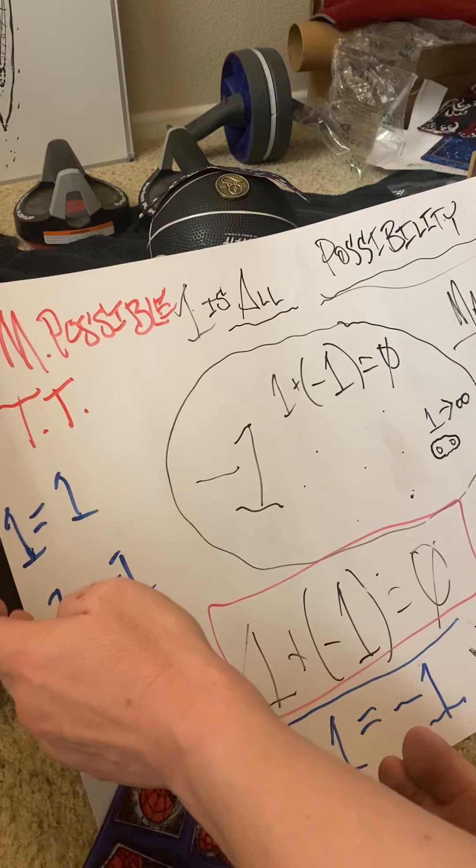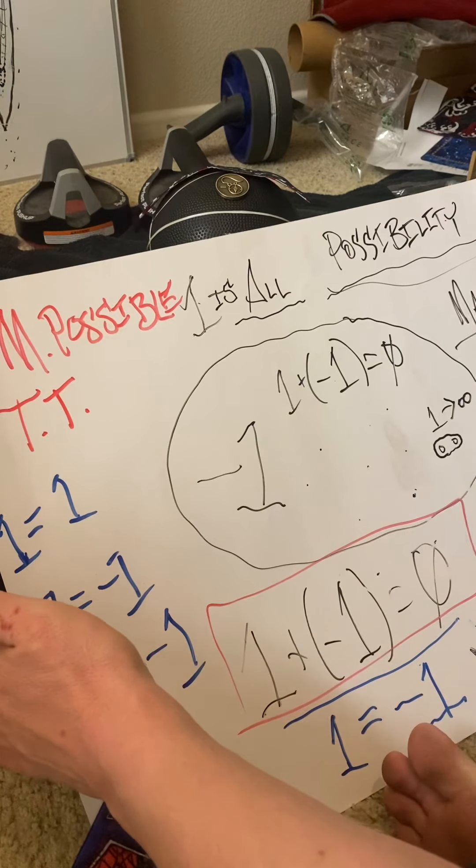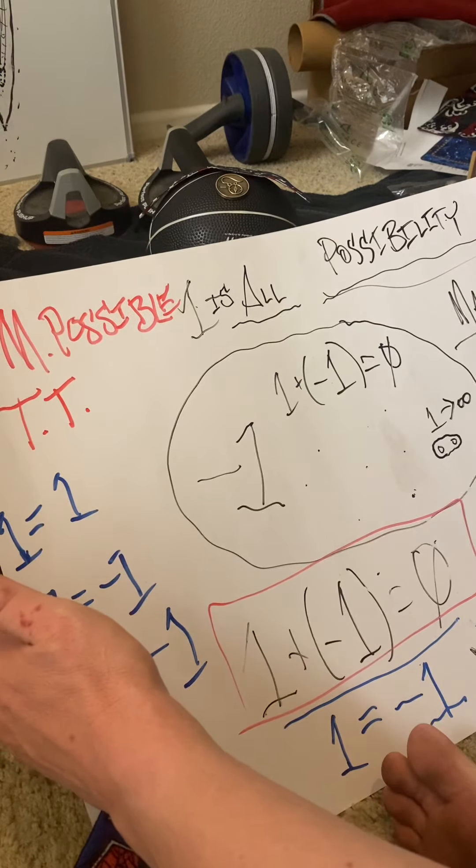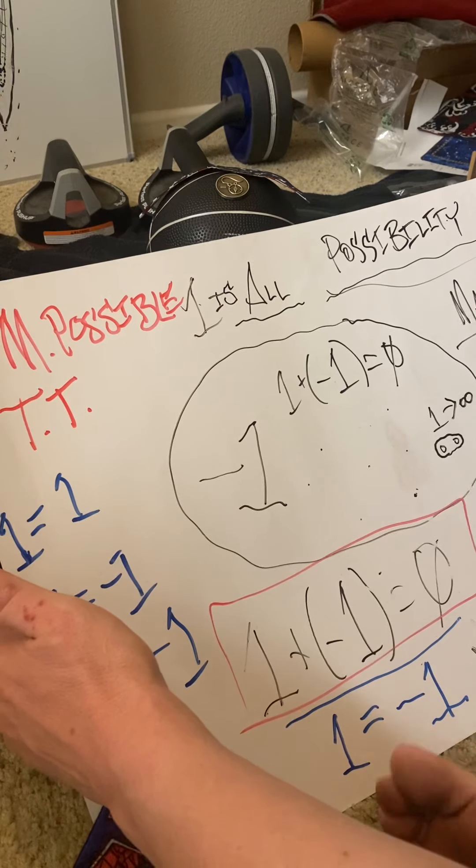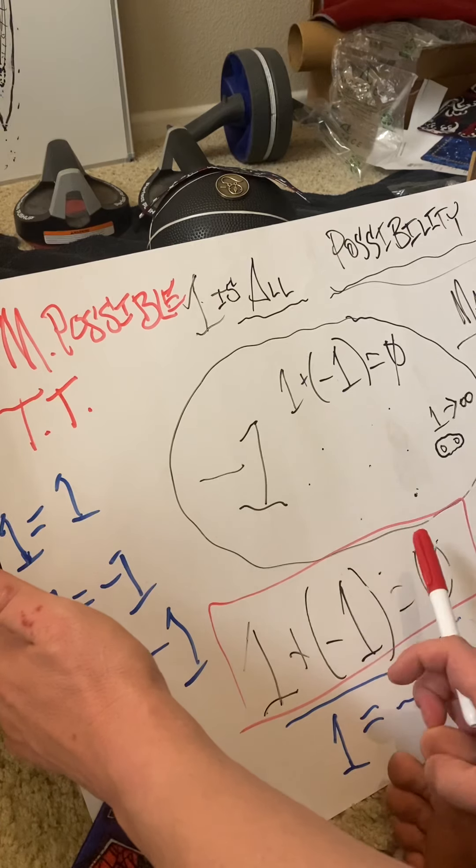Anyway, that being said, for everyone who doesn't get this, there's a lot of ways to explain it. But let's just be real about it. That this is a proof of one equaling negative one within certain parameters, or essentially within certain dimensionalities.